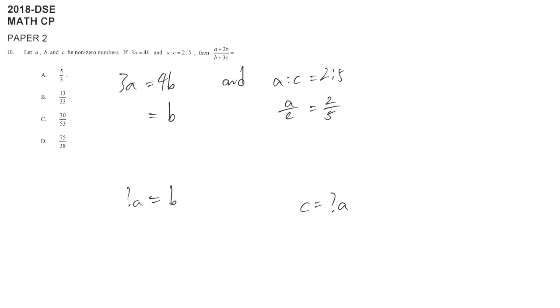So I want b, I don't want 4, so 3 over 4 times a. We achieve the first target. And then 5a equals 2c, c is equal to 5 over 2a here, so we achieve the second target also.